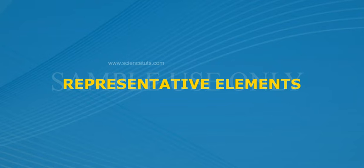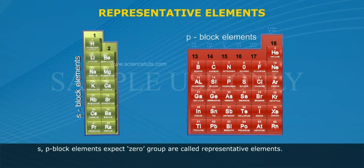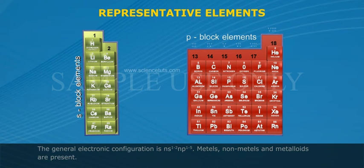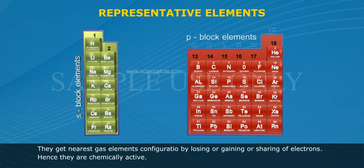Representative elements: S-block and P-block elements except the zero group are called representative elements. The general electronic configuration is ns¹⁻² and p¹⁻⁵. Metals, non-metals, and metalloids are present. They achieve the nearest noble gas element configuration by losing, gaining, or sharing electrons.